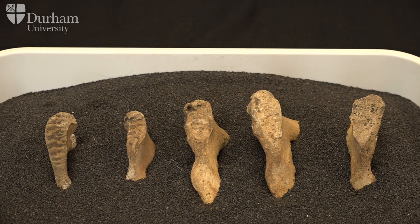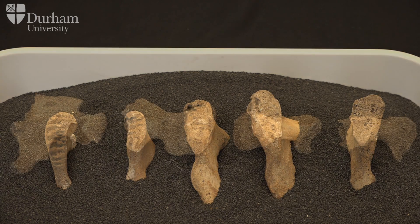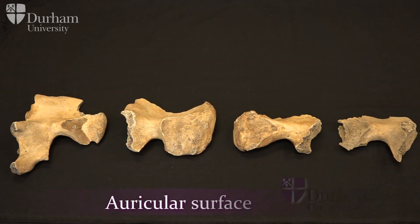In this final pubic symphysis example, the rim has started to degenerate and the surface is showing some porosity, placing it in stage six of the Suchey-Brooks system.